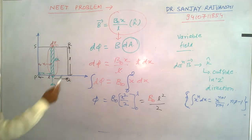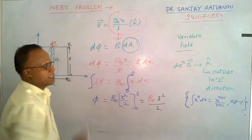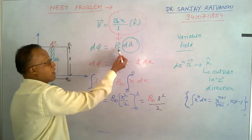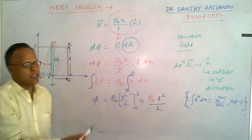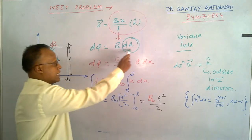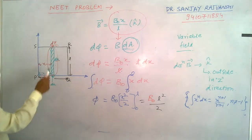So d phi is given by B dA. And B is given this one, put this value of B from here to here. So you get d phi is B naught x by L. Area dA, dA is length into breadth, area of a rectangle strip.